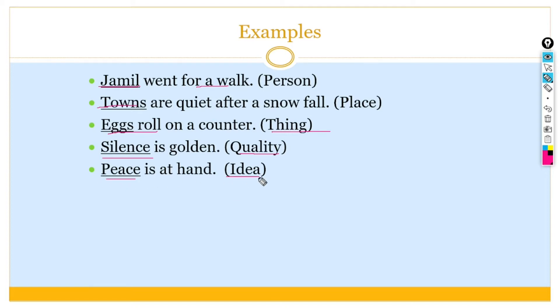Peace is at hand. So, peace is an idea. So, in all these sentences, you can see that we can use subject as a name, place, things, qualities, and ideas.